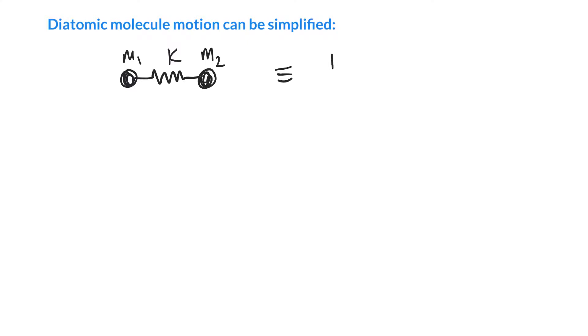We can show that this motion can actually be decomposed into two separate motions. We can replace it by vibrational motion of a reduced mass or effective mass with a spring constant k, plus the translation through space of a giant mass capital M, which is equal to the individual masses by themselves.